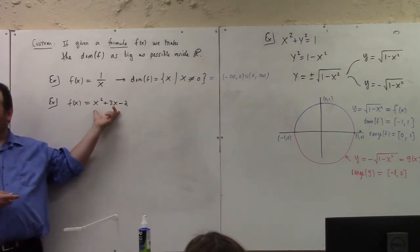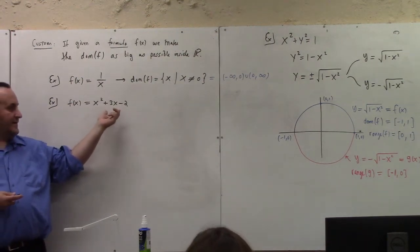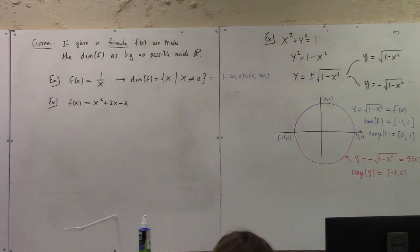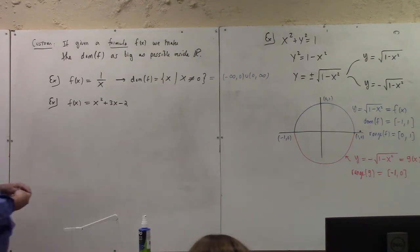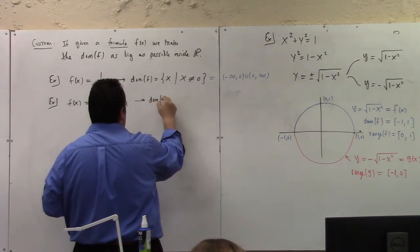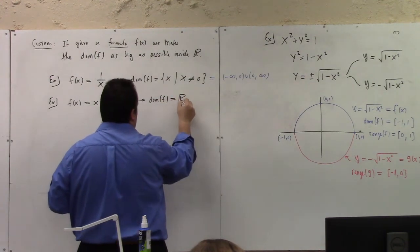Like, what real numbers can we square the real number and then add 3 times that number and then subtract 2 from? Like, is there any real number where we can't do that? No. Right. So the domain in this case is no strings attached. The domain is just the whole real line. So sometimes, it's just that simple.